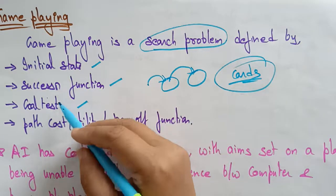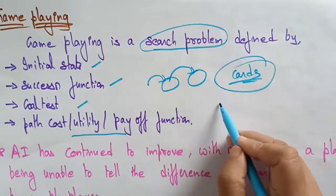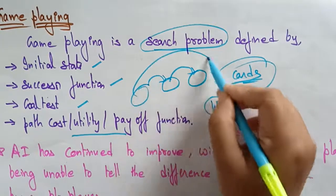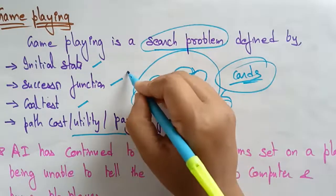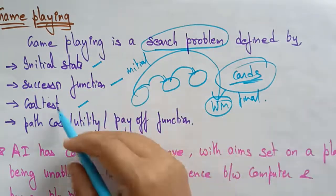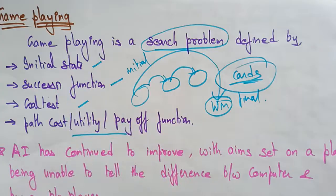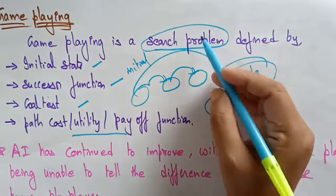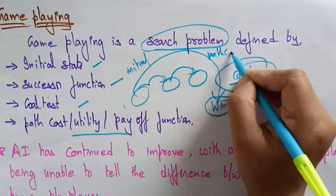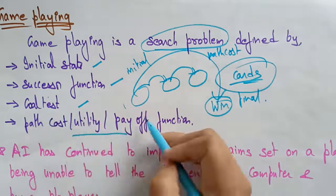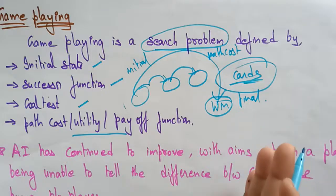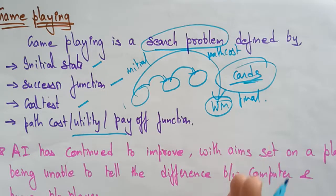The goal cost tells you what the complete cost is from the initial state to the final state. The goal state is your goal test — I want to win the game. There is also a path cost from initial to final. We need to know the path cost as well as the goal test — how the goal will be occurring. These are all the components of game playing as a search problem.